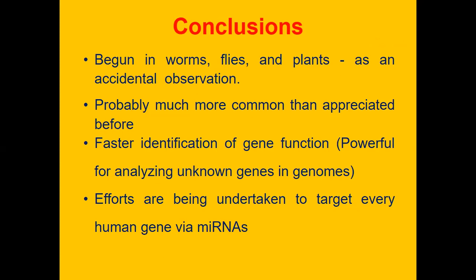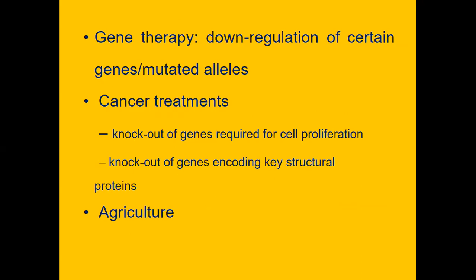The Flavr Savr tomato is also an example of RNAi. In conclusion, in worms, flies, and plants, these were accidental observations and are probably much more common than appreciated. RNAi enables faster identification of gene function and analysis of unknown genes and genomes. Efforts are being undertaken to target every human gene via mRNA silencing, including gene therapy, downregulation of mutated alleles, cancer treatment, knockout of genes required for viral replication, and applications in agriculture.